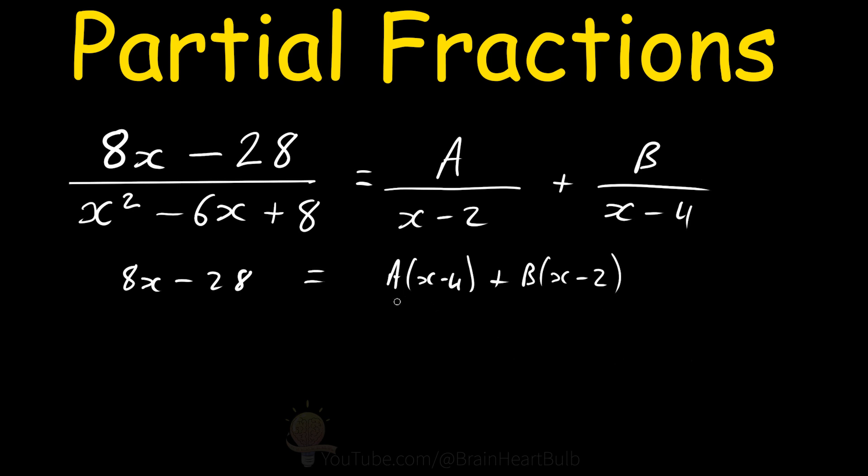Now in order to separate out one of these constants here, we need to make one of these factors equal 0. If we want this factor to equal 0, we let x equal 2, because 2 minus 2 is equal to 0. And this will cancel out the B term, so we can simply focus on the A term here. So if we let x equal 2,